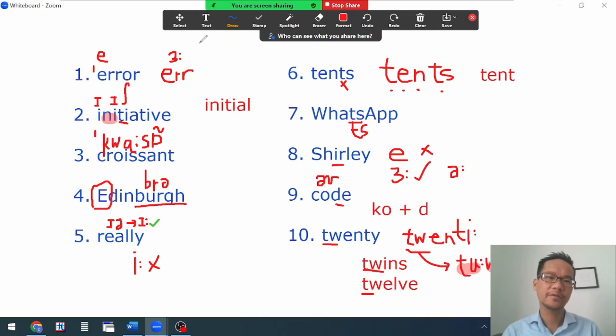Let's read從頭到尾讀一次給大家聽。ERROR, INITIATIVE, CROISSANT, EDINBURGH, REALLY, TENTS, WHATSAPP, SHIRLEY, CODE, TWENTY。